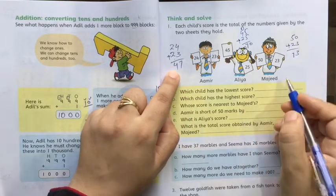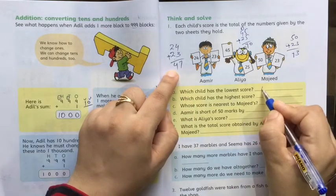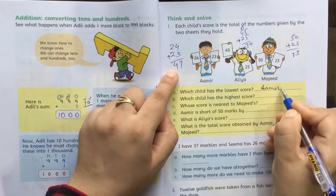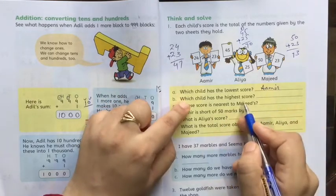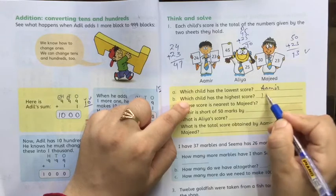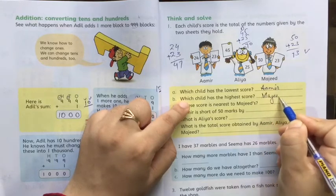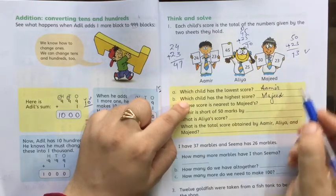Which child has the lowest score? Amir has the least. So you will write here: Amir. Which child has the highest score? Majeed has the most. Majeed has 73.